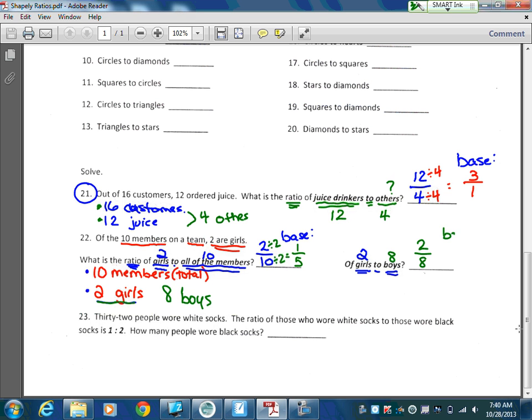So I know that I can input that information here. And I'm going to set it up like I'm reading it, girls to boys, meaning it would be 2 to 8. And I need to make sure that I find my base. Is that the smallest that we can get? No, because I can see they both share two, so I can divide it by two, which would give me 1 to 4, meaning for every one girl, there would be four boys on the team.